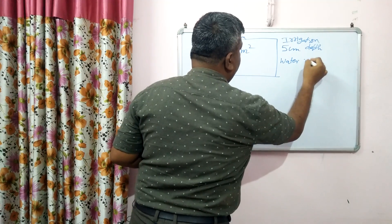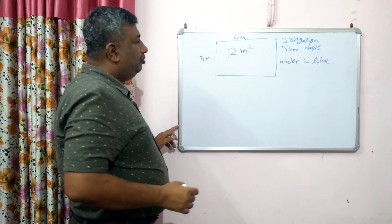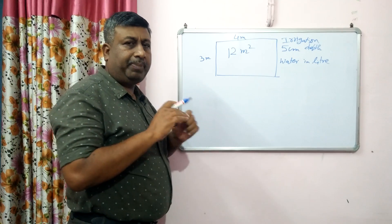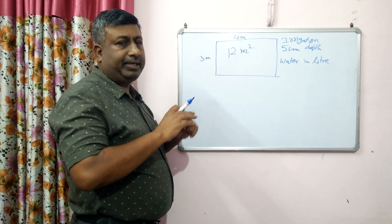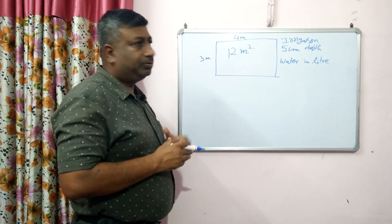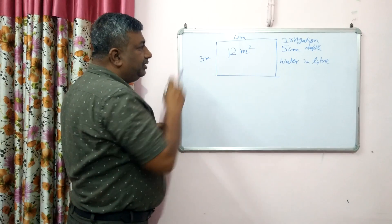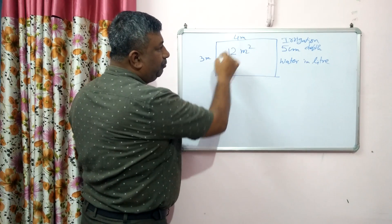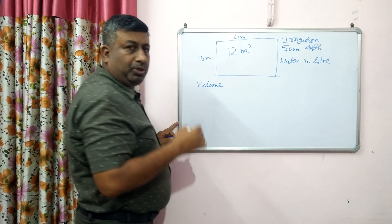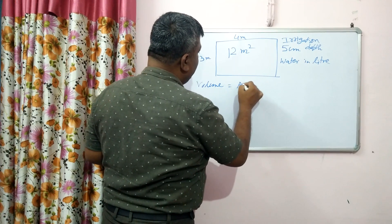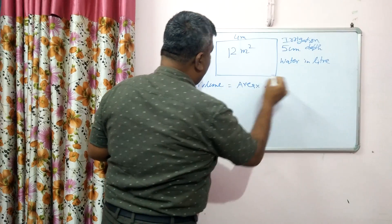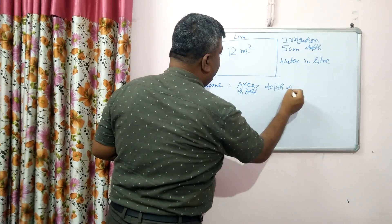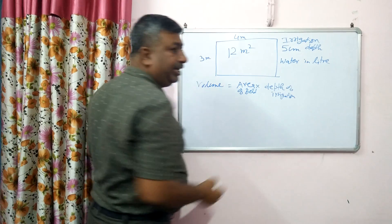So how much water is required in liter? How much liter water is required to irrigate this small field up to depth of 5 centimeter? It is a simple calculation. Please watch this lecture completely, then you can develop a good understanding. So area is 12 square meter and depth is 5 centimeter. The total volume of field to be irrigated is equal to area multiplied by depth. This is the simple formula — area of field multiplied by depth of irrigation gives the volume.